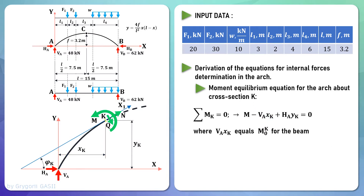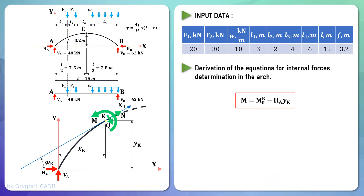The last component of the moment equilibrium equation about cross section K for the arch is the moment from horizontal support reaction multiplied by distance YK. Rewriting the moment equilibrium equation about cross section K with what has been said, the moment equilibrium equation in an arbitrary cross section K for the arch is obtained.